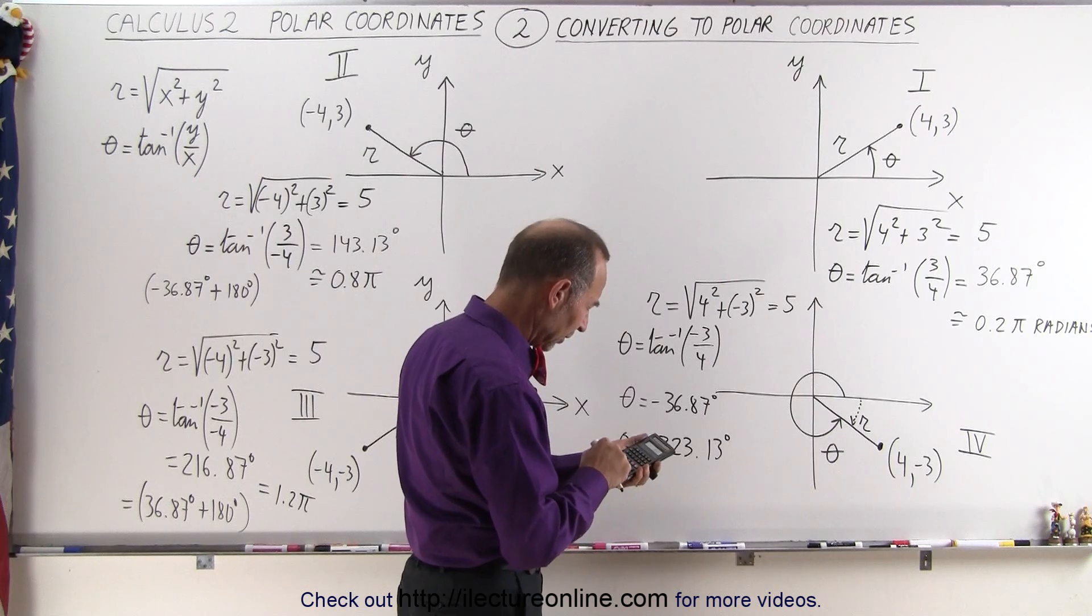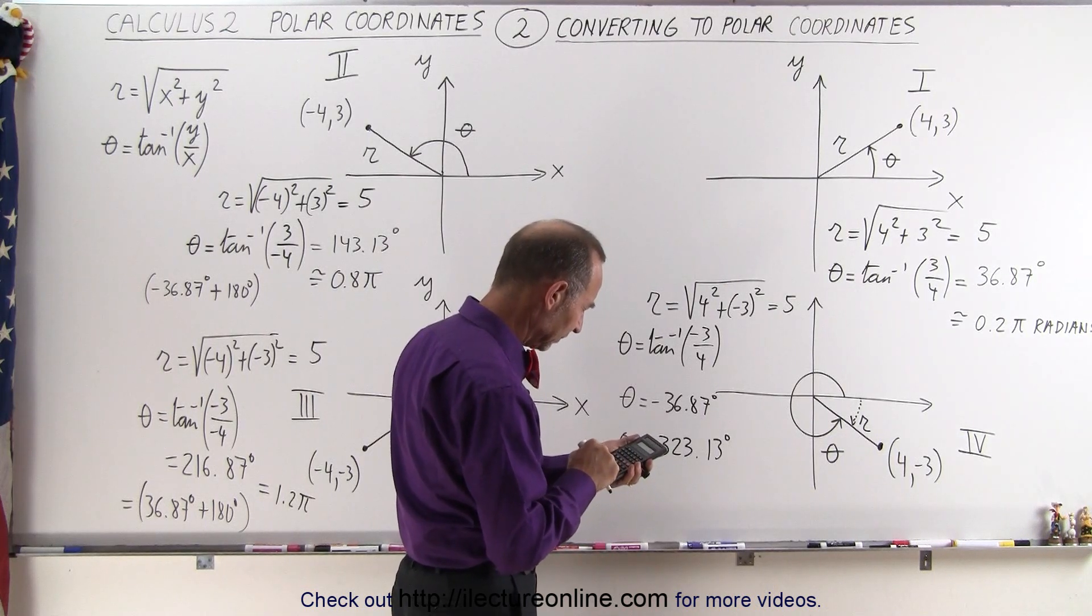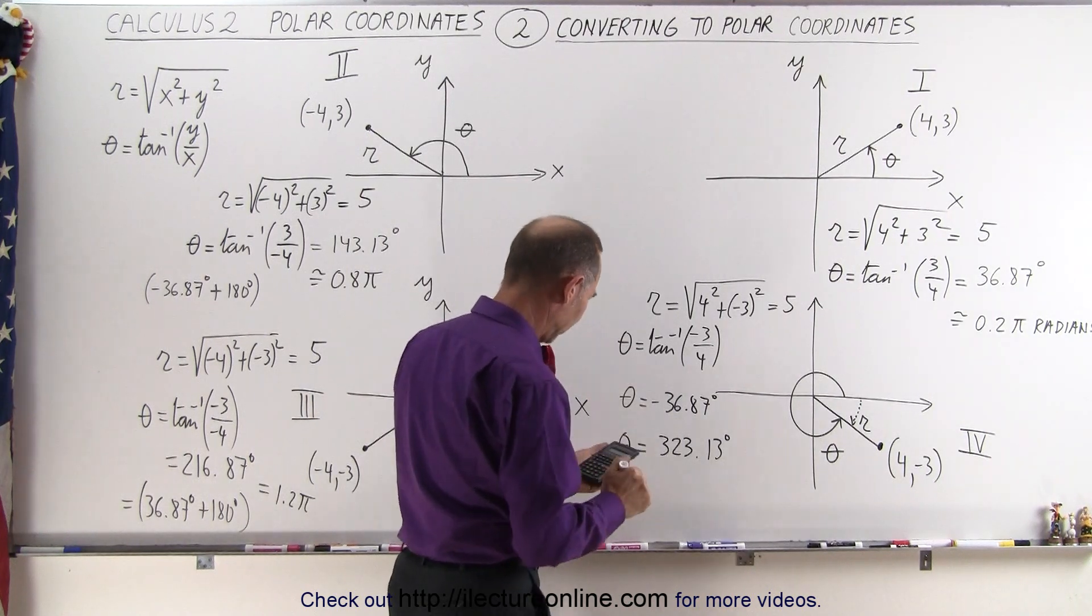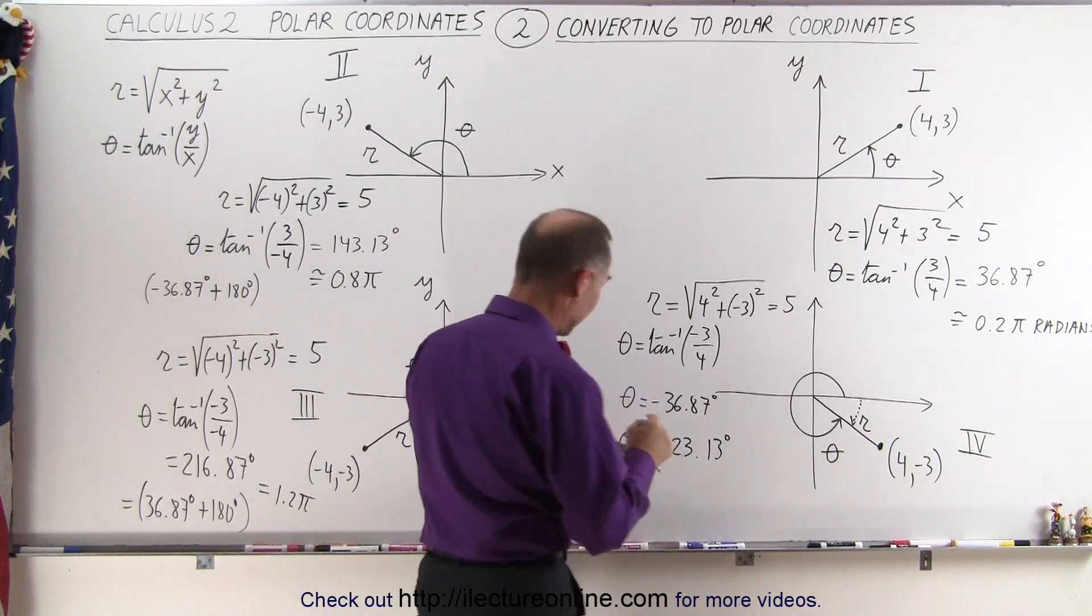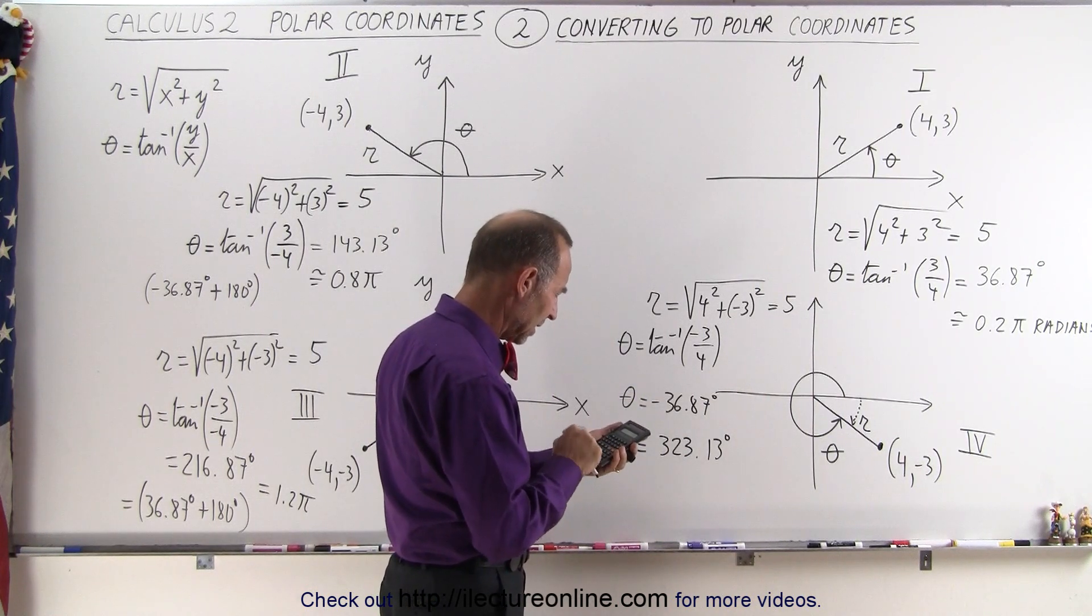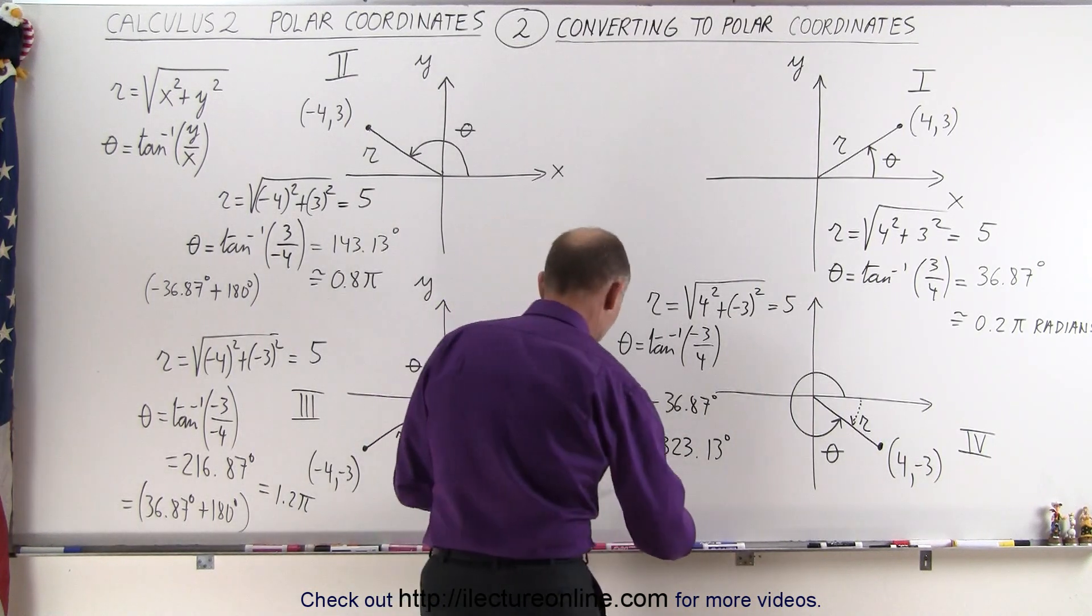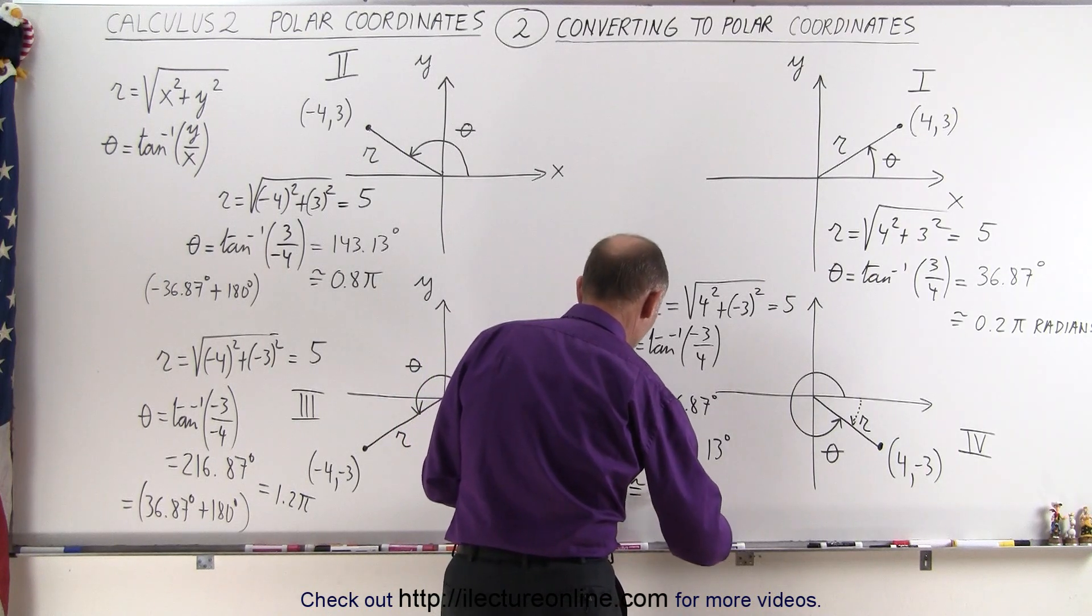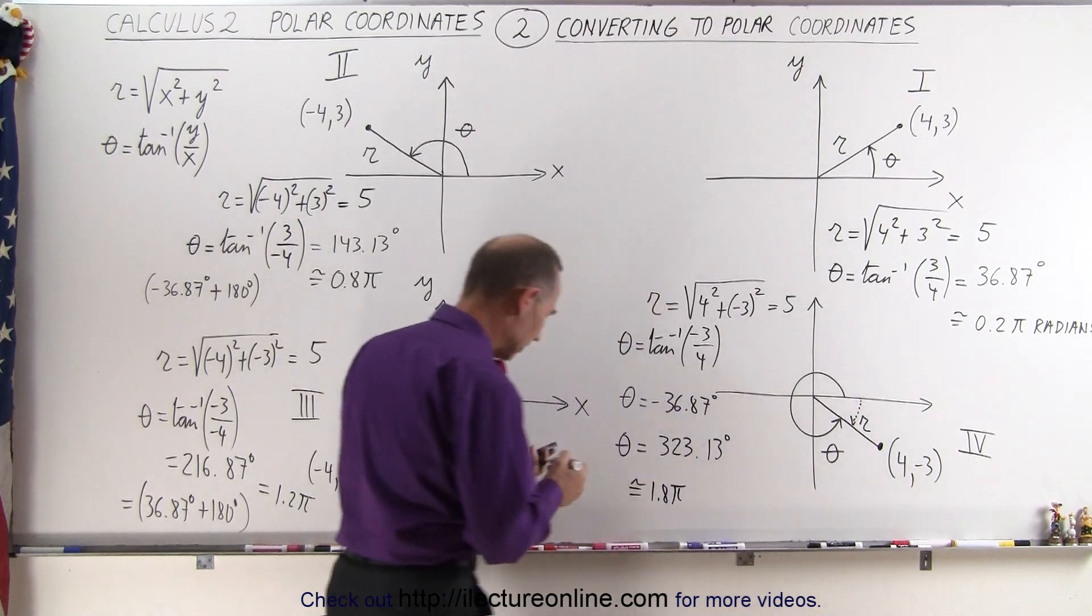And then over here, 323.13 divided by 180, that gives us about 1.8 pi radians.